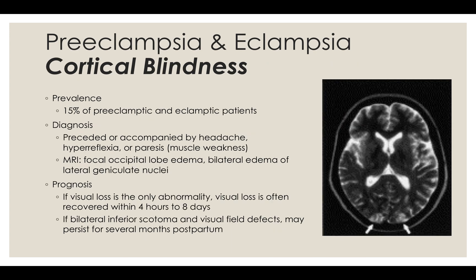15% of preeclampsic and eclampsic women develop edema, ischemia, or ischemic infarctions of the occipital and parietal lobes of the brain, or the thalamus, leading to syndromes of cortical blindness. The patient may believe they can see, but in fact cannot appreciate their visual surroundings, and may develop altitudinal or homonymous visual field defects. Headache, hyperreflexia, or paresis are features commonly associated with cortical blindness. Pupillary light reflexes remain intact. An MRI is the imaging study with the greatest diagnostic yield. Findings include focal occipital lobe edema and/or bilateral edema of the lateral geniculate nuclei in the area of the thalamus. On the right is a T2 MRI showing hyperintense signal bilaterally in the occipital-parietal regions at the mid-occipital level.